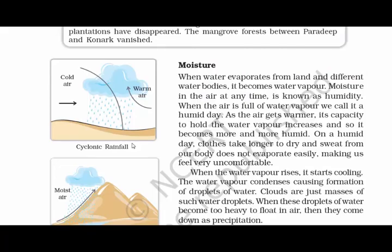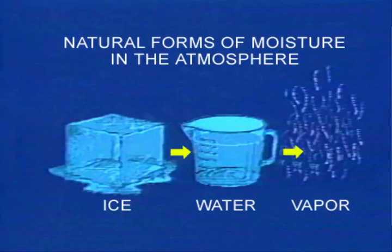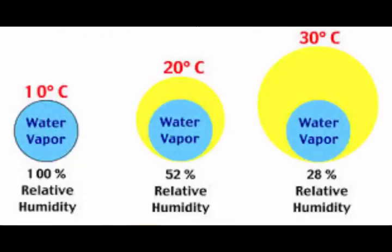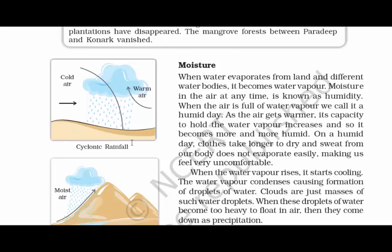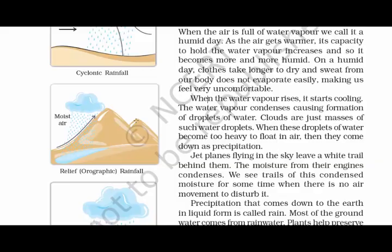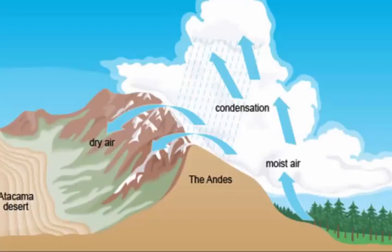Coming to the next topic — moisture. Moisture is the amount of water vapor present in air, and the more moisture in the air, the more humidity it creates. When the air is full of water vapor, we call it a humid day. As the air gets warmer, its capacity to hold water vapor increases, making it more and more humid. On a humid day, clothes take longer to dry, and sweat from our body does not evaporate easily, making us feel very uncomfortable. When water vapor rises, it starts cooling and condenses, causing formation of droplets of water. Clouds are just masses of such water droplets. When these droplets become too heavy to float in air, they come down as precipitation. Precipitation that comes down to the Earth in liquid form is called rain, and most groundwater comes from rainwater.